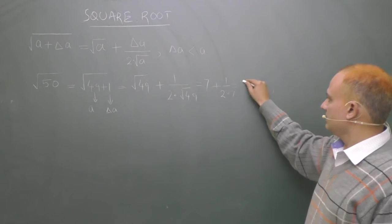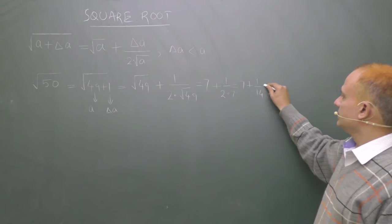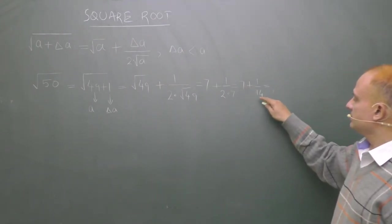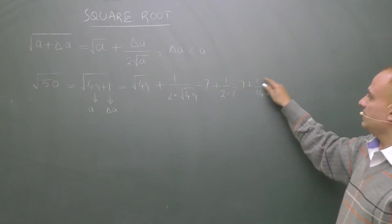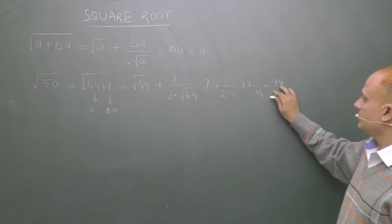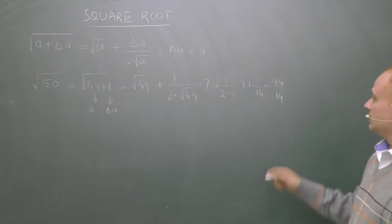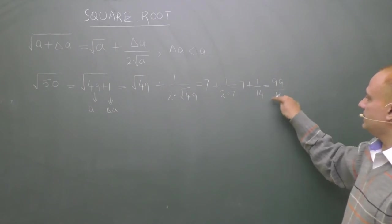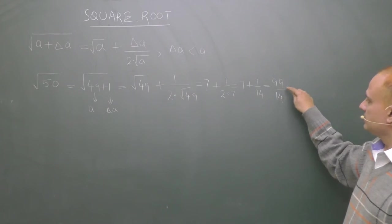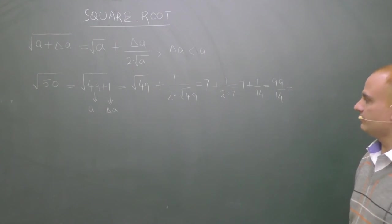7 plus 1 upon 14. 98 plus 1, 99 upon 14. Now divide this 99 by 14. You will find square root of 50.